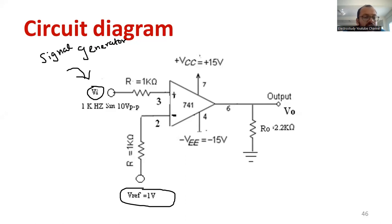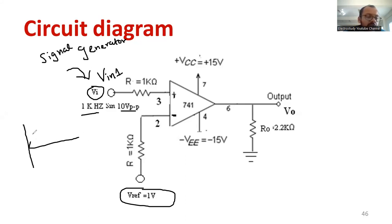The specification of the first input — let us call VIN1 — is 1 kilohertz, and the peak-to-peak voltage will be 10 volts. We will be maintaining 10 volt peak-to-peak; that is what we have to maintain.